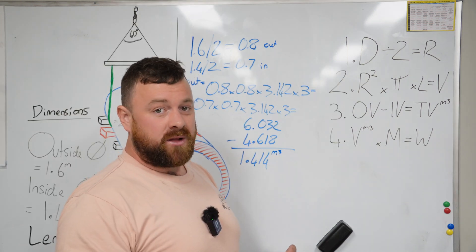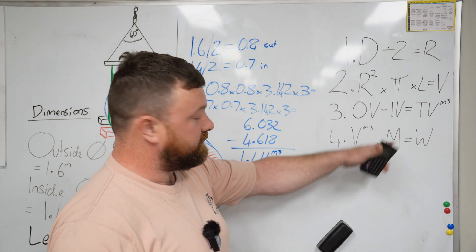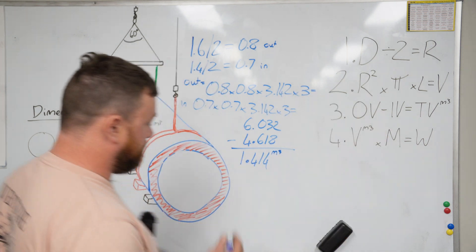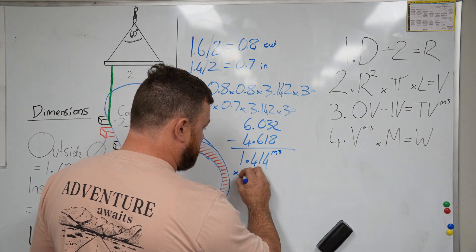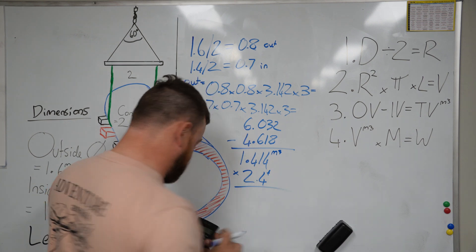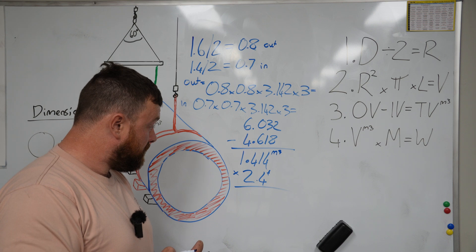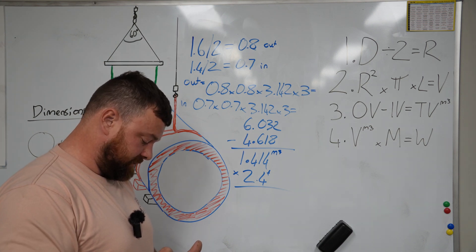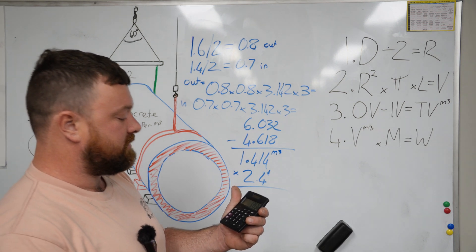So the final and easiest part of our concrete pipe formula, number four, is our volume multiplied by our mass. So volume is 1.414 times 2.4 equals—1.414 times 2.4 equals 3.3936.